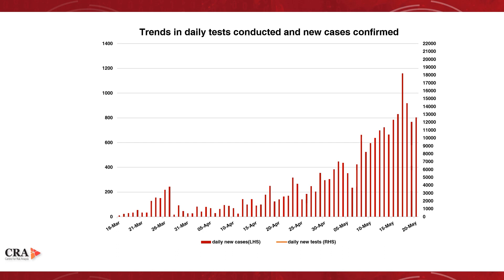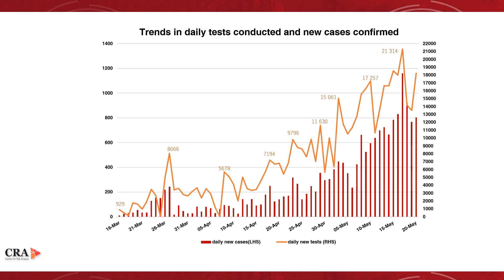Here, we illustrate the erratic changes in South Africa's testing data. We see that the number of cases tracks closely the number of new tests. That is to say, whenever the number of new cases comes down from an earlier peak, it is also the case that the number of tests has come down from the earlier peak.